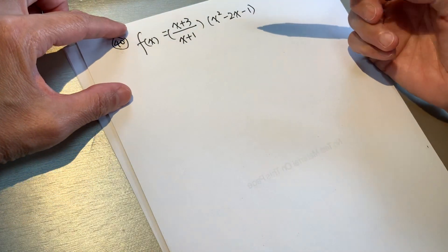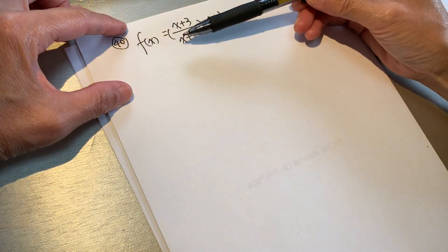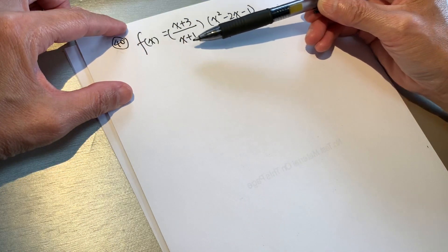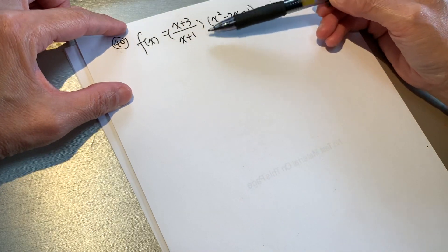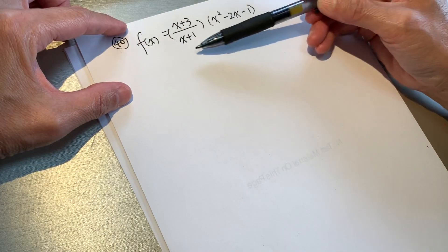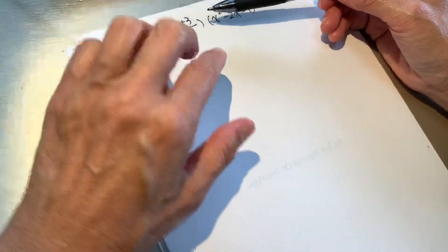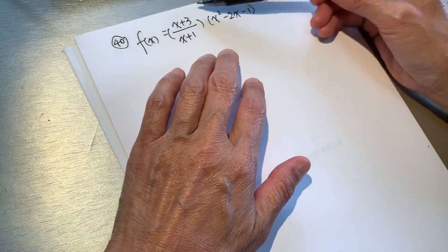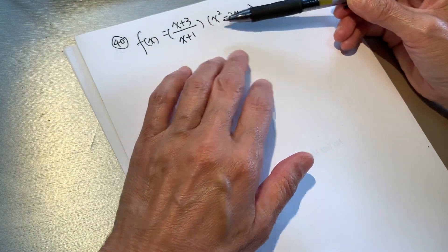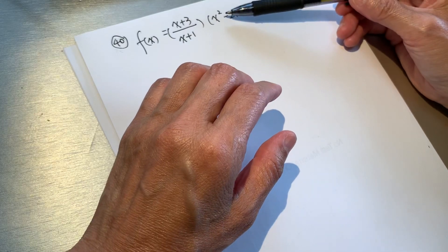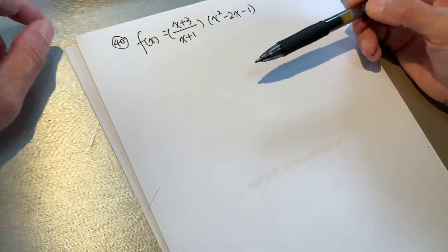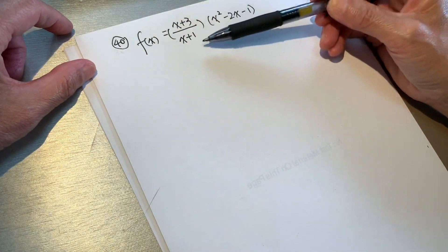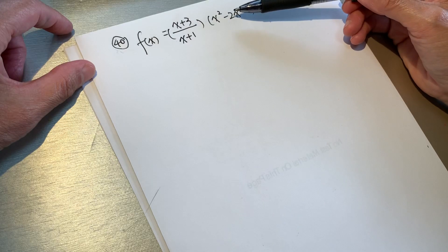No matter how complicated it is, it's two factors multiplying each other, so we can use a product rule.